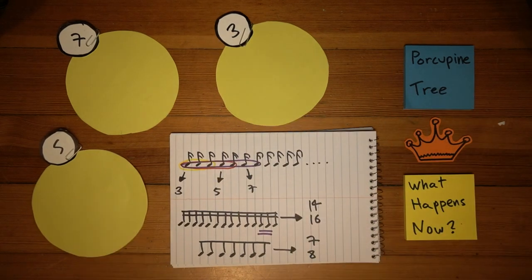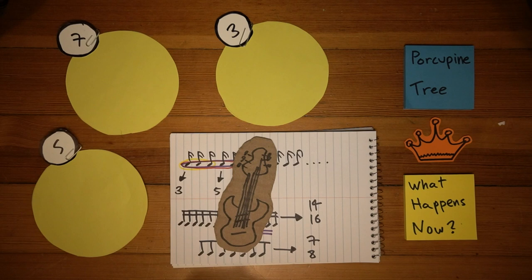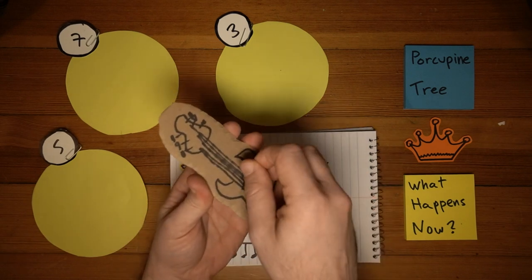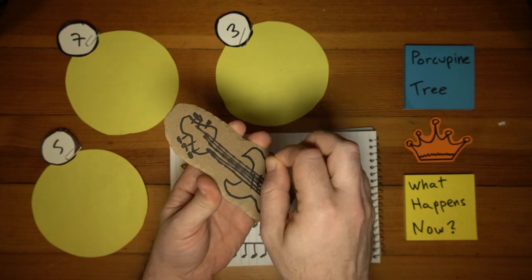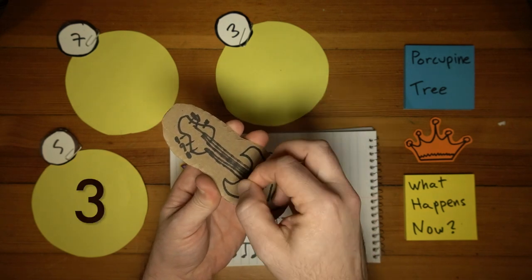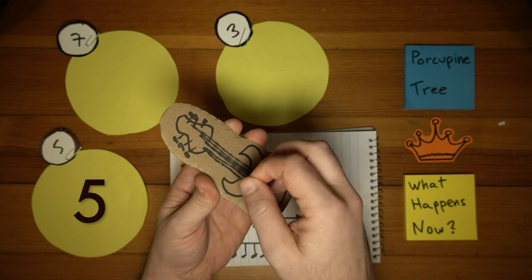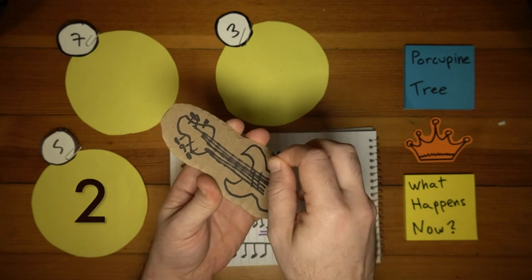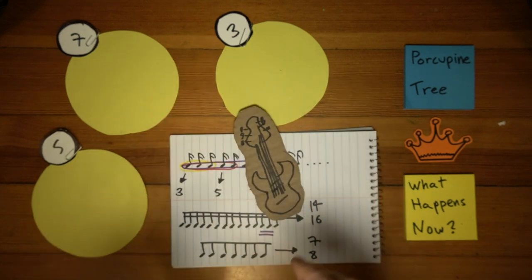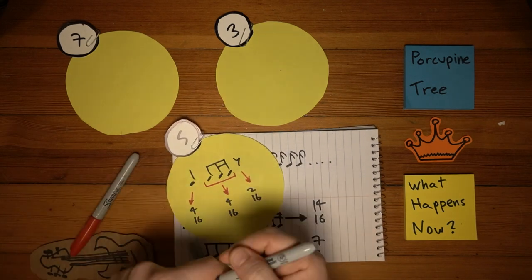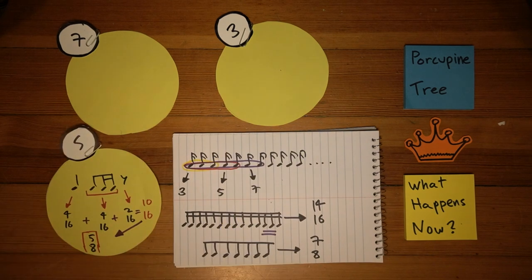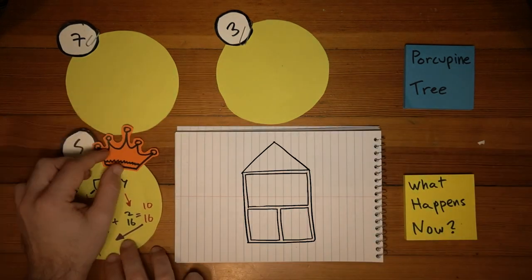The first riff we meet is this one, played by the guitar. This riff technically is in 10-16, but as I said before, I'm going to be calling it 5-8. And it looks like this. As of now, this is the host.